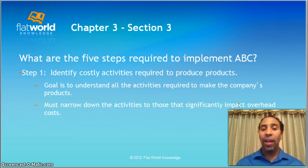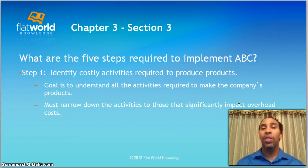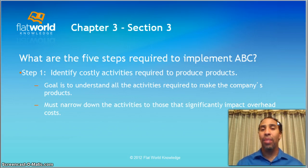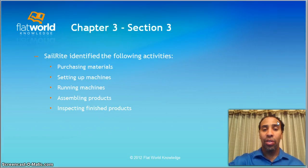Step one: identify costly activities required to produce products — those are your cost drivers. You have to figure out what's driving those costs. If you're 100% assembly, you know what's driving the cost: how much you pay the individuals to assemble the products. The goal is to understand all activities required to make the company's product, and you must narrow down to those that significantly impact overhead costs. Sailrite identified the following activities: purchasing materials, setting up machines, running the machines, assembling products, and inspecting finished products.